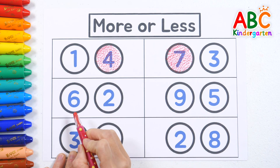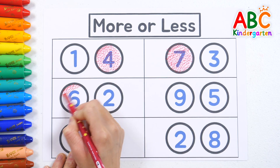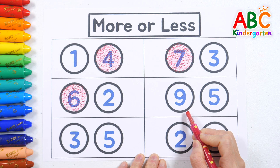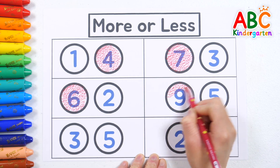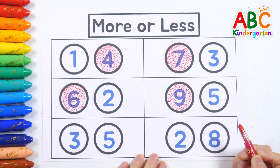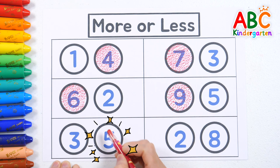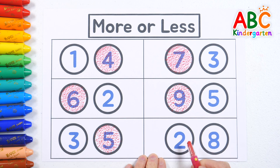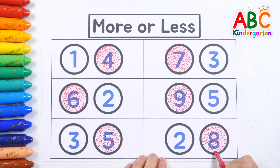Pick the bigger number between six and two, and color it in! Yes! Six is more! Well done! How about 9 and 5 — which is bigger? The answer is 9. Very good! Between 3 and 5, which is bigger? The answer is 5. Now let's find the bigger number between 2 and 8. That's right! 8 is bigger! Great job!